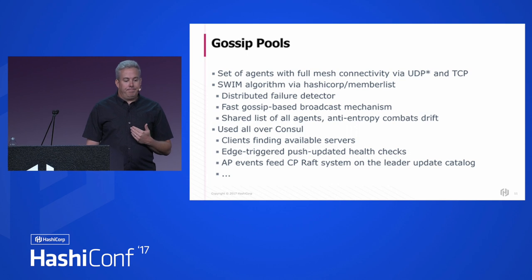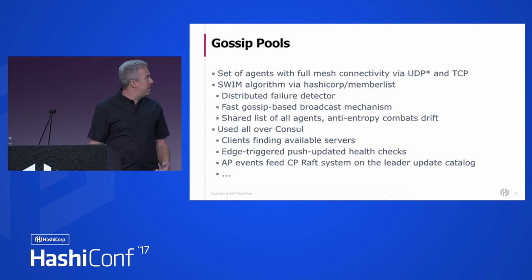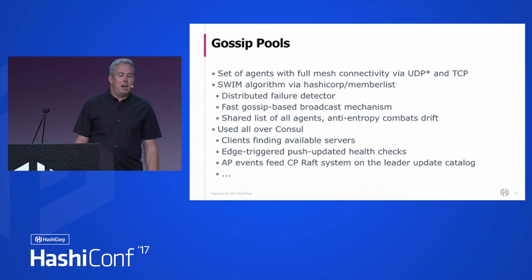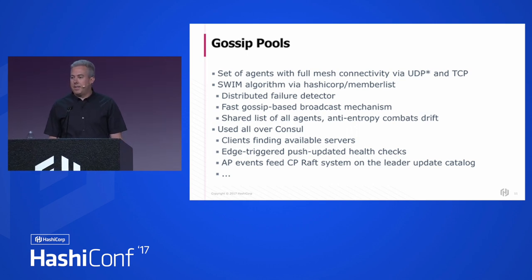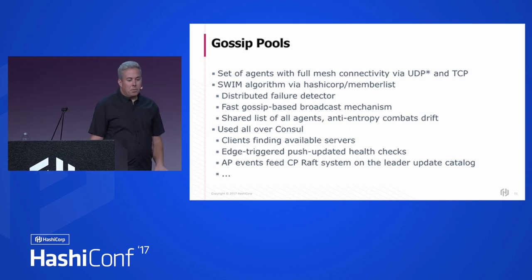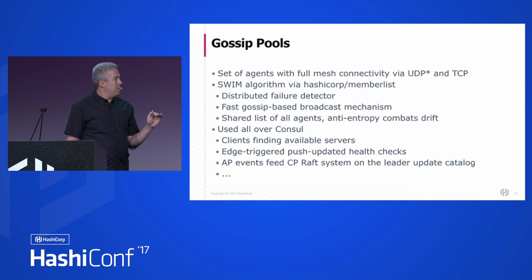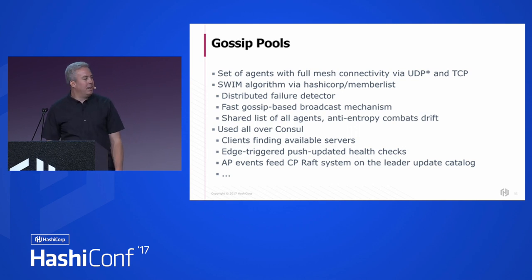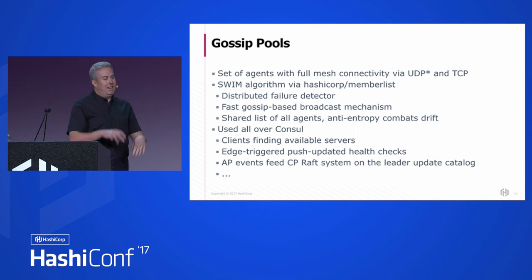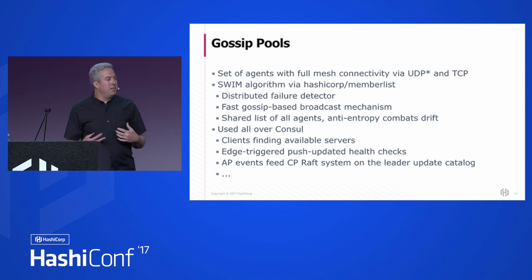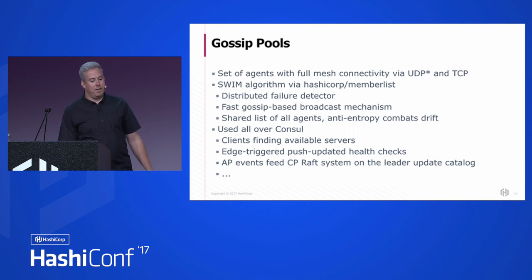A word worth defining is 'gossip' or 'gossip pools.' A gossip pool is a set of agents connected together running an algorithm based on an academic paper published under the name SWIM — Scalable Weakly-consistent Infection-style process group Membership. It's a way for a group of machines to collectively learn about each other and keep a shared understanding of which machines are alive in a cluster.